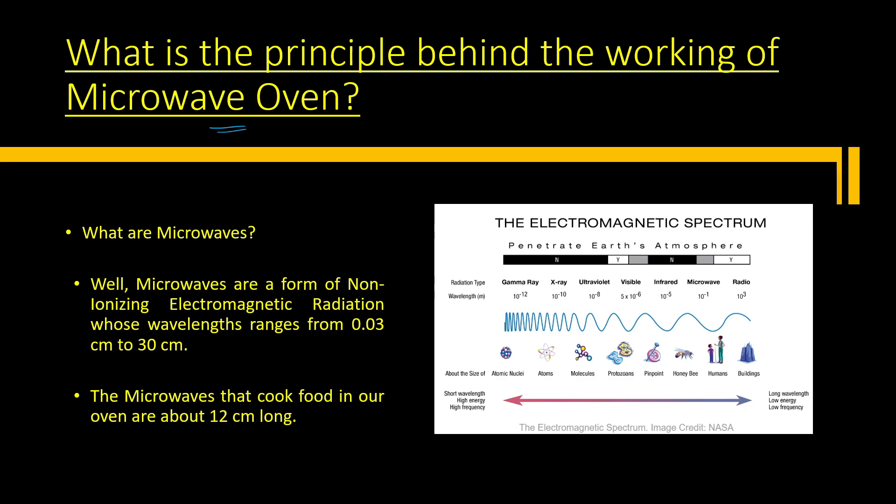Microwaves are a form of non-ionizing electromagnetic radiation whose wavelength ranges from 0.03 cm to 30 cm. As you can see from this diagram, we are having a lot of electromagnetic radiations ranging from gamma ray, X-ray, ultraviolet, visible, infrared, then microwave, and at last radio waves. You can also say that microwaves are basically radio waves but of very lesser wavelengths. The microwaves that cook food inside the microwave oven are about 12 cm long in wavelength.